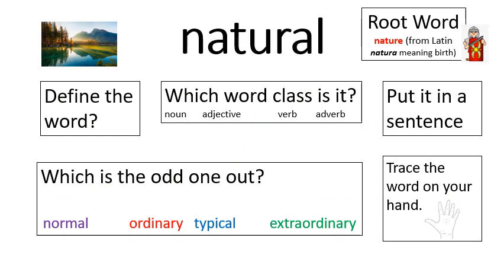The word we're learning this week is 'natural'. It comes from the root word 'nature', which in itself comes from a Latin word 'natura' meaning birth. Because we've added another suffix, A-L, to the end, we've dropped the E from T-U-R-E. That's why we have that T-U-R in the middle making a 'ch' sound — which we might feel like spelling with C-H or T-C-H, but we mustn't, because it comes from the word 'nature'. Can you define the word, identify its word class, put it in a sentence, find the odd one out, and trace it on your hand?